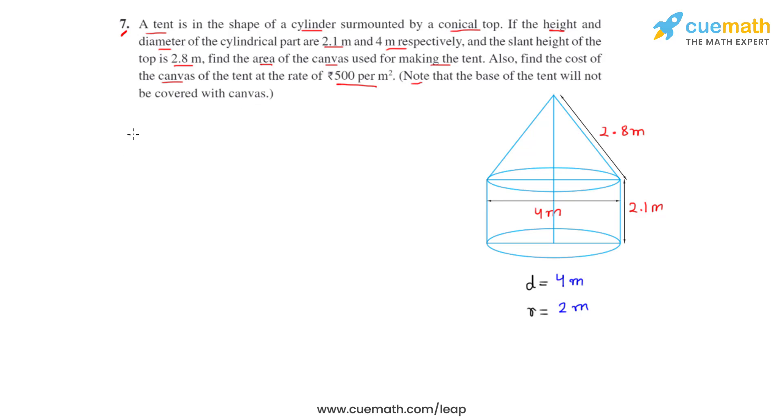So by that information, we can write that the surface area which is to be calculated for the given tent equals curved surface area of cone plus curved surface area of the cylinder. We know the formulas to find the curved surface area of cone and of cylinder, so let's write that.